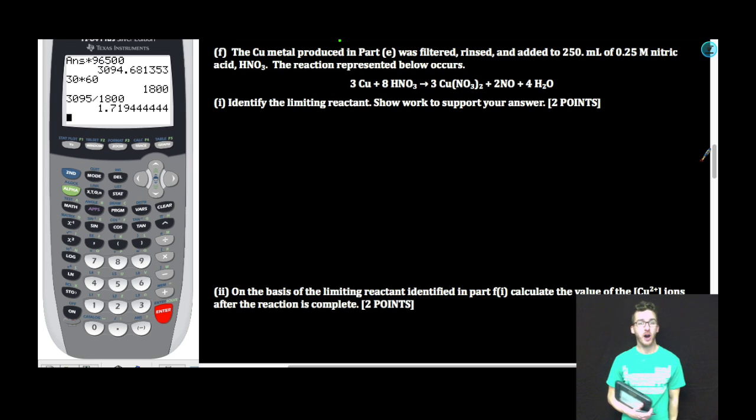Part F: The copper metal produced in Part E was filtered, rinsed, and added to 250 mils of 0.25 molar nitric acid. The reaction represented below occurs. Subpart I: Identify the limiting reactant. Show work to support your answer. We should be jumping for joy anytime College Board gives us some stoic. Lots of different ways you can solve limiting reactant problems. I like to take each amount of reactant, see how much product could potentially be formed, and determine it based on that. If you want to do it a different way, no problem. Just make sure you show your work.